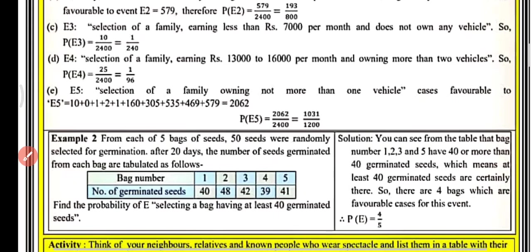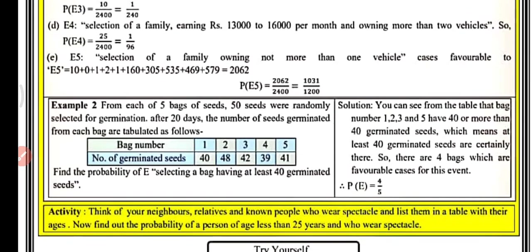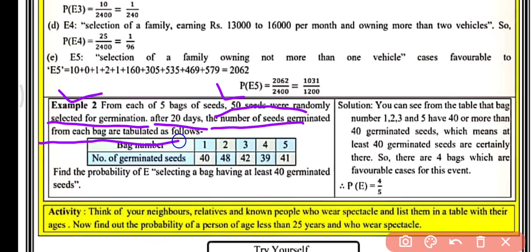In example number two, from each of the five bags of seeds, 50 seeds were randomly selected for germination. After 20 days, the number of seeds germinated from each bag are tabulated below. We have five bags — bag number one, two, three, four, and five — with the number of germinated seeds recorded.